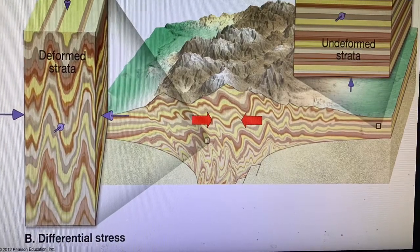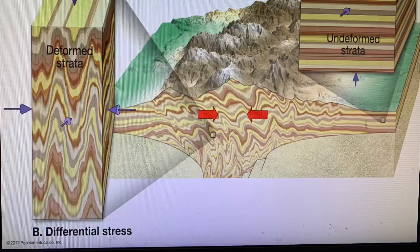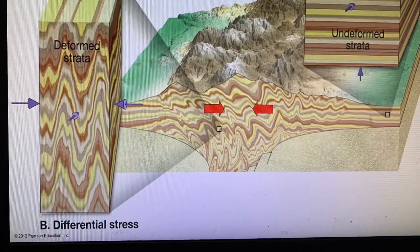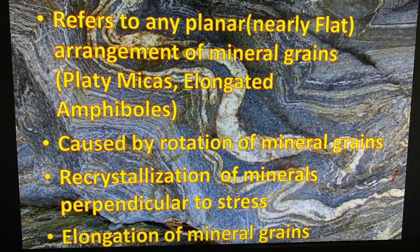With foliation, the strata get really deformed, bent, and twisted — like you see in the picture. The undeformed strata in one corner contrasts with the highly squished and twisted result from directed pressure shown by the big red arrows. You can also see a sample of conglomerate that once had nice round pebbles; those pebbles have been stretched out. Looking at it, you can tell the pressure was applied from the top and bottom.